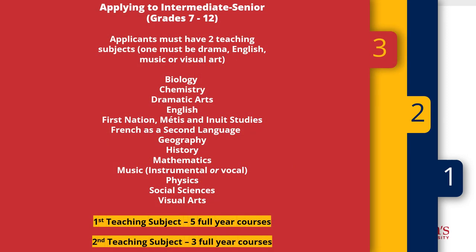If you are applying to the intermediate senior program, you will need to choose two teaching subjects when you apply. For artists and community education students, one might be drama, English, music, or visual arts. For your first teaching subject, you need five full-year courses, and for your second, you need three full-year courses. There are some exceptions, so make sure you check the website for each teaching subject. For example, if you are interested in having chemistry as one of your teaching subjects, you need to have at least one organic chemistry course. If you are interested in history, we encourage applicants to have a Canadian history course.